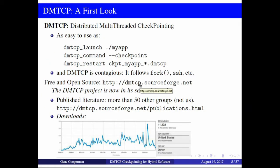How does it work? You can use it quite easily with just three commands: DMTCP launch, checkpoint request, and restart. It's contagious — if you call fork, SSH, or whatever, it follows. For that reason, we can checkpoint most major flavors of MPI, because they start other processes through SSH, and we're contagious — our library gets carried along onto the new node. We have a central coordinator to keep track. It's free and open source, and at this point, more than 50 other groups in the refereed literature describe how they use DMTCP, groups not associated with us.